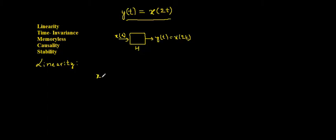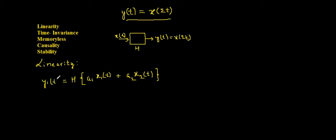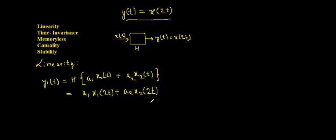For linearity, I need at least two inputs: x1(t) and x2(t). I will scale these inputs by scaling factors a1 and a2, add them, and give this combined input to the system operator h to get output y1(t). Since the system replaces t with 2t, a1 is a constant and is retained, giving a1·x1(2t), plus a2 is a constant giving a2·x2(2t).